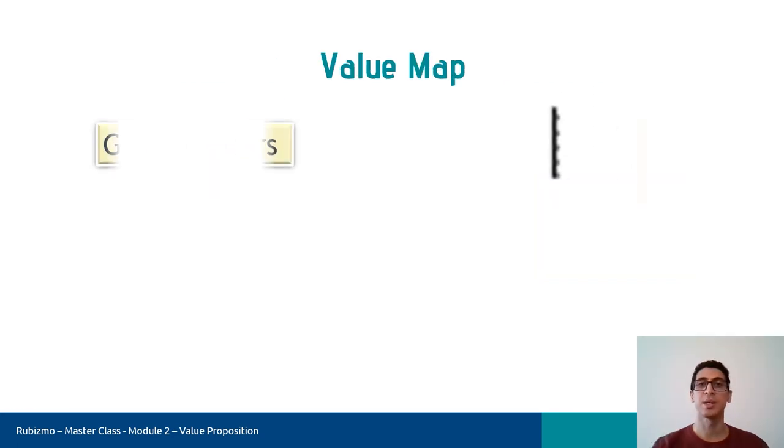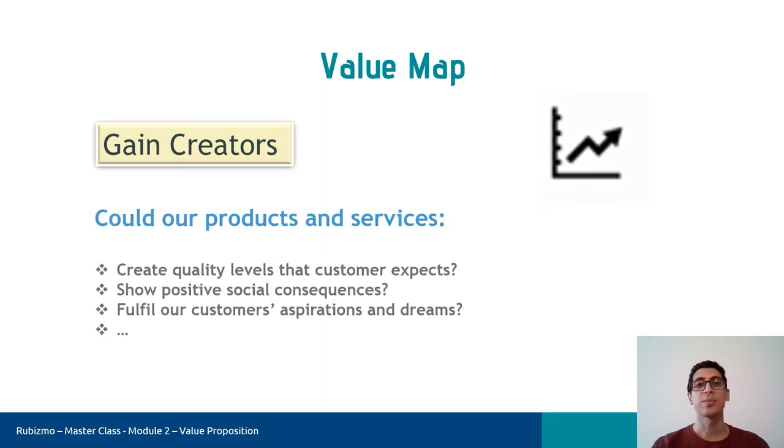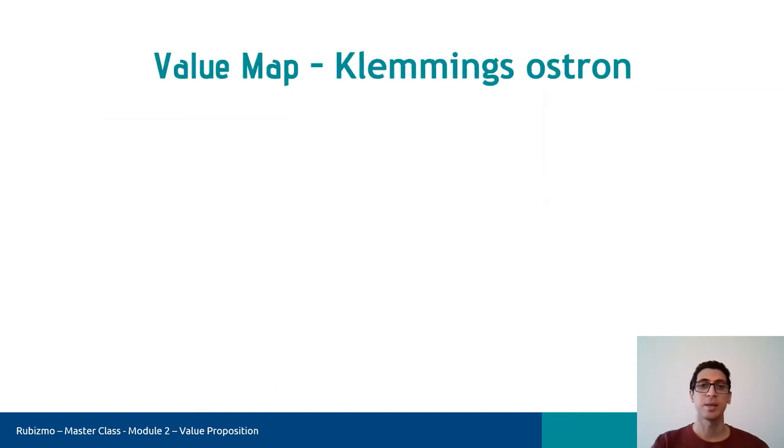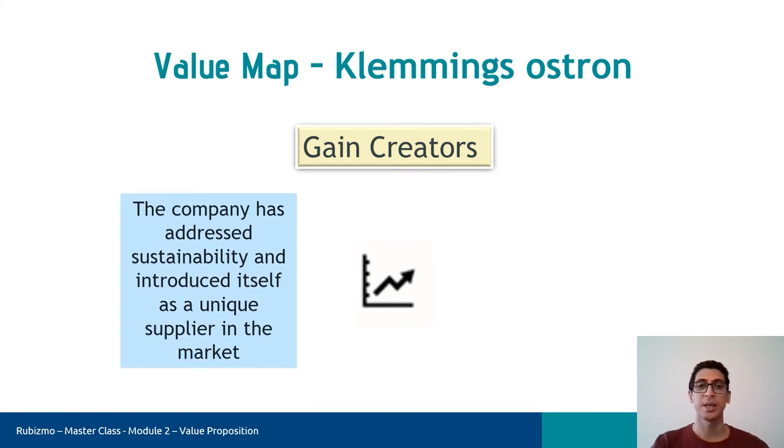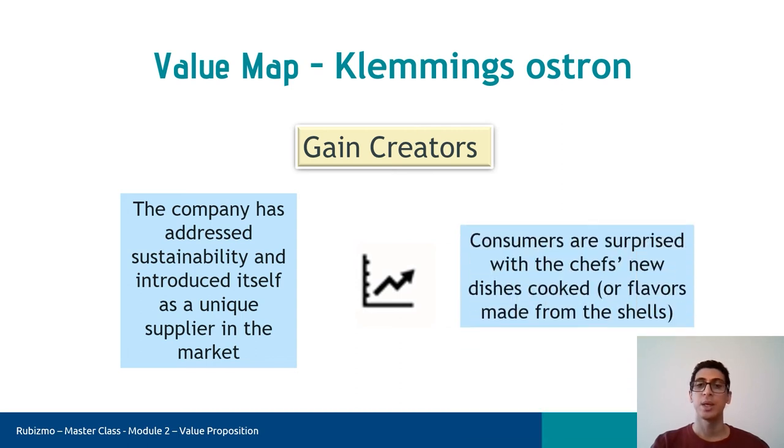And the last block is the gain creators, which shows our intention to create what a customer expects. Gain creators don't need to address all the gains that are identified. Instead, focusing on what is relevant to customers and makes a difference to them matters. Here we have to know, could our products and services create quality levels that customers expect, show positive social consequences, fulfill our customers' aspirations and dreams, and so on? And back to the case, we can see that the company has addressed sustainability and introduced itself as a unique supplier in the market. In addition, consumers are surprised with the chef's new dishes or flavors made from the oysters.